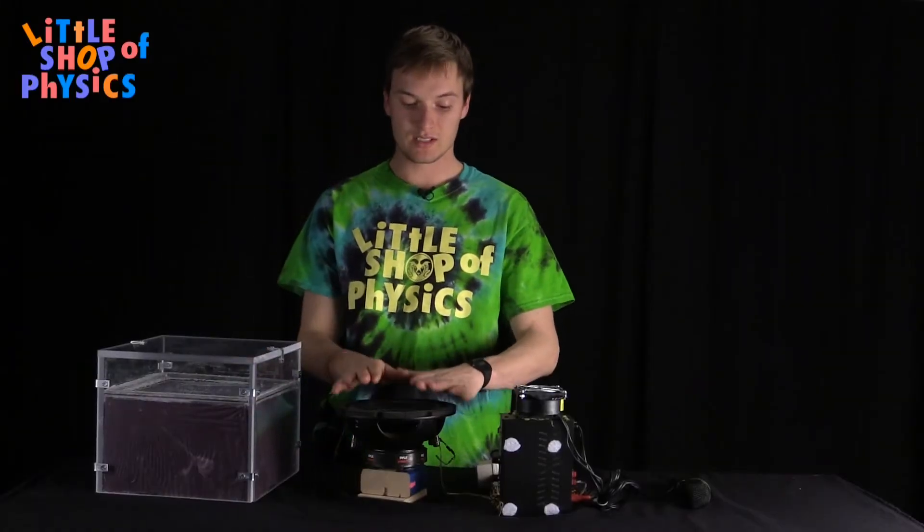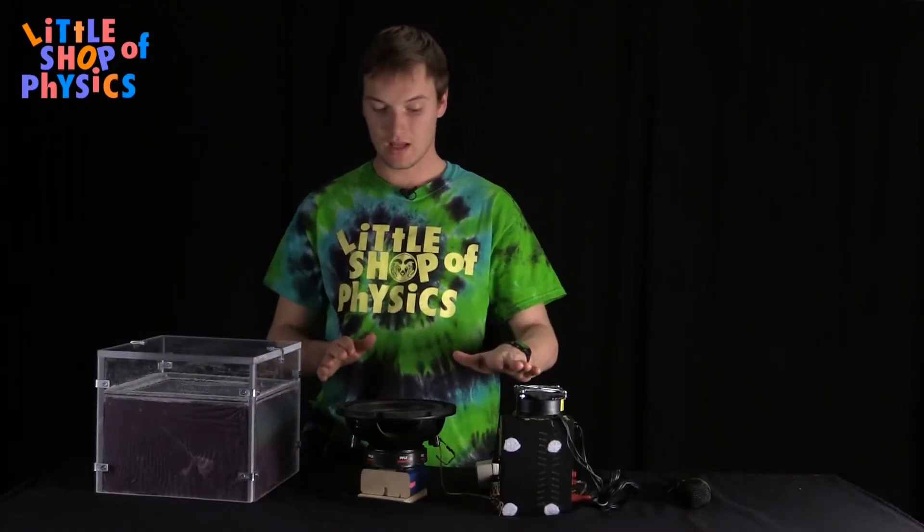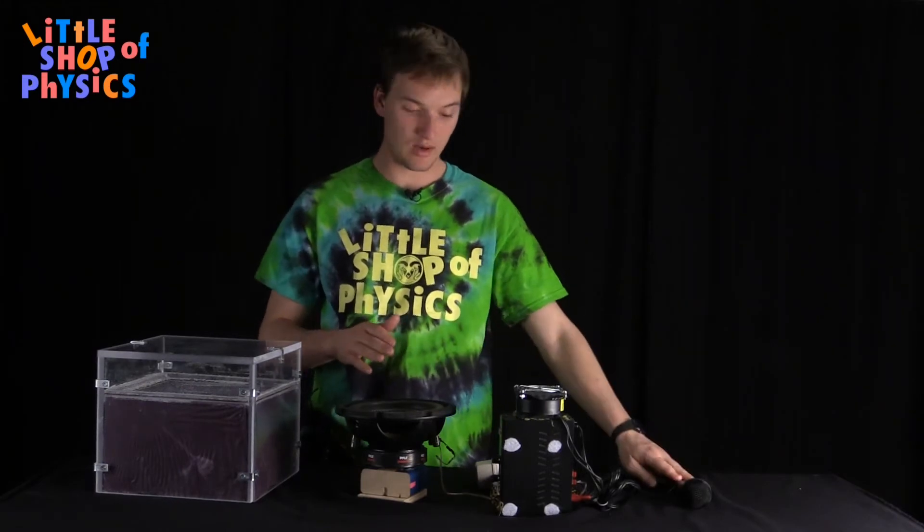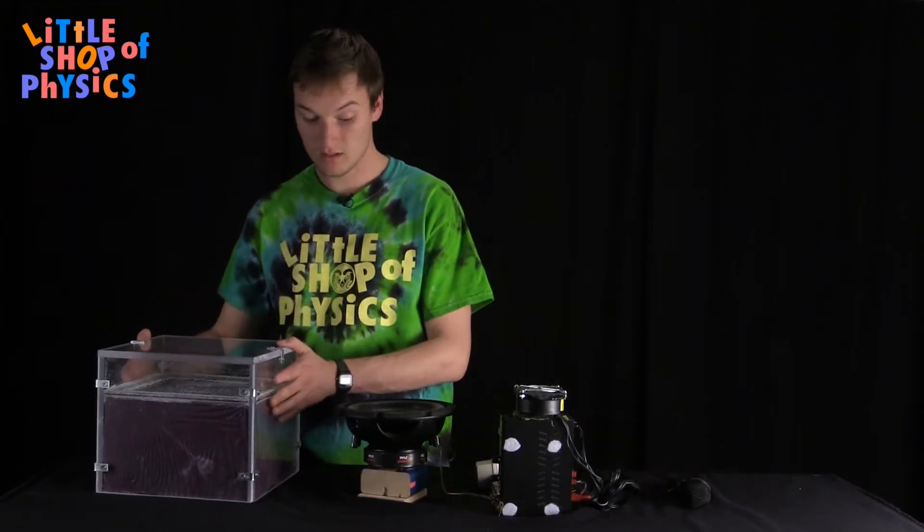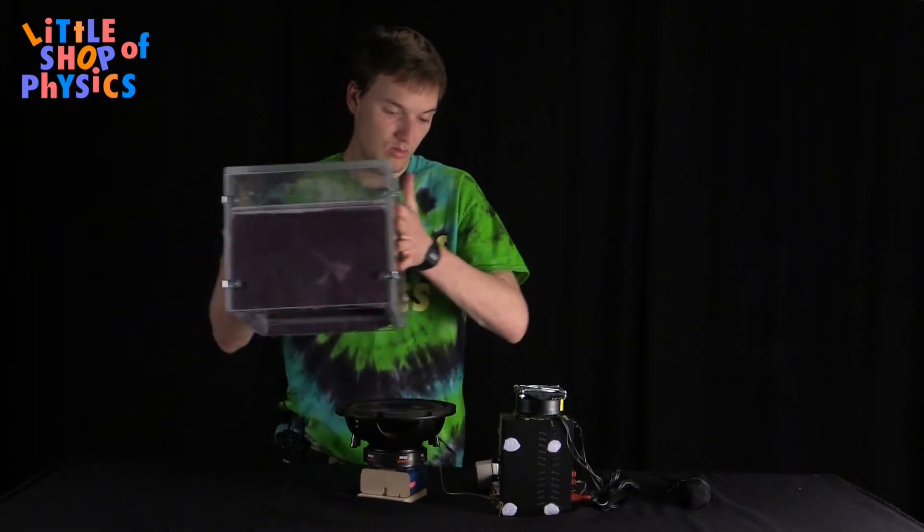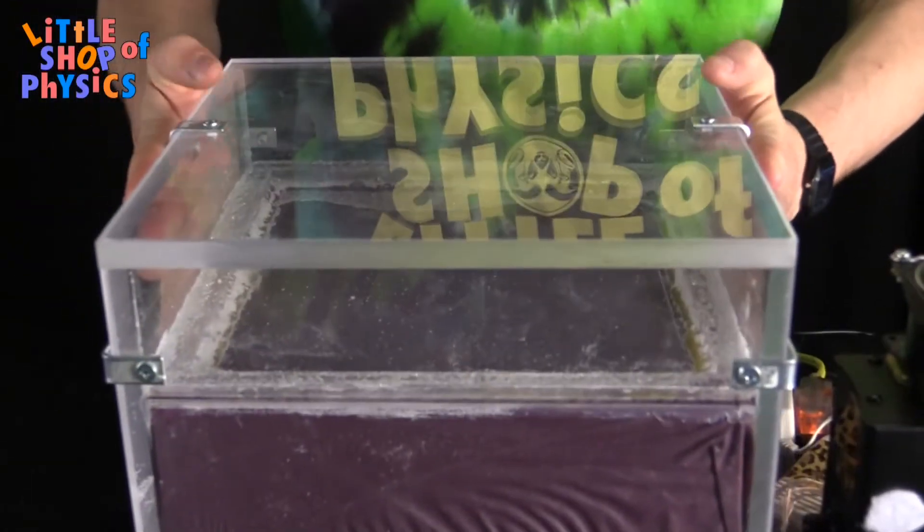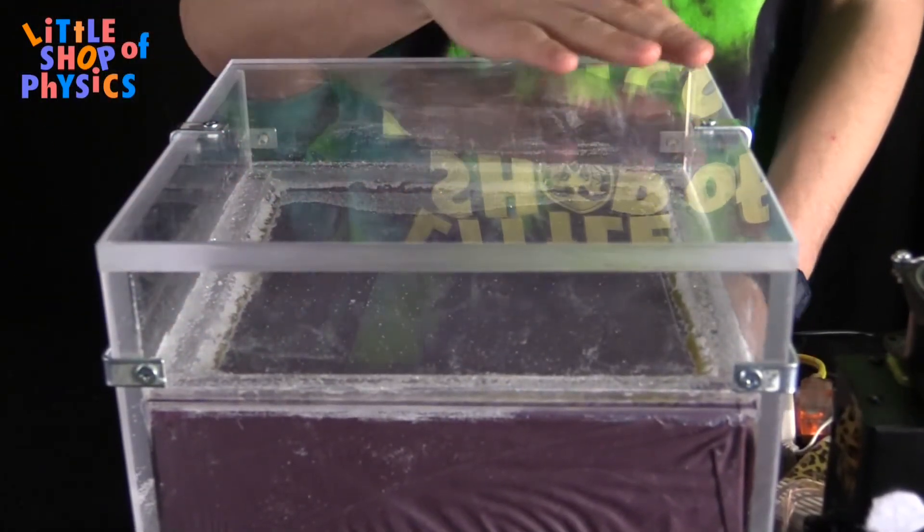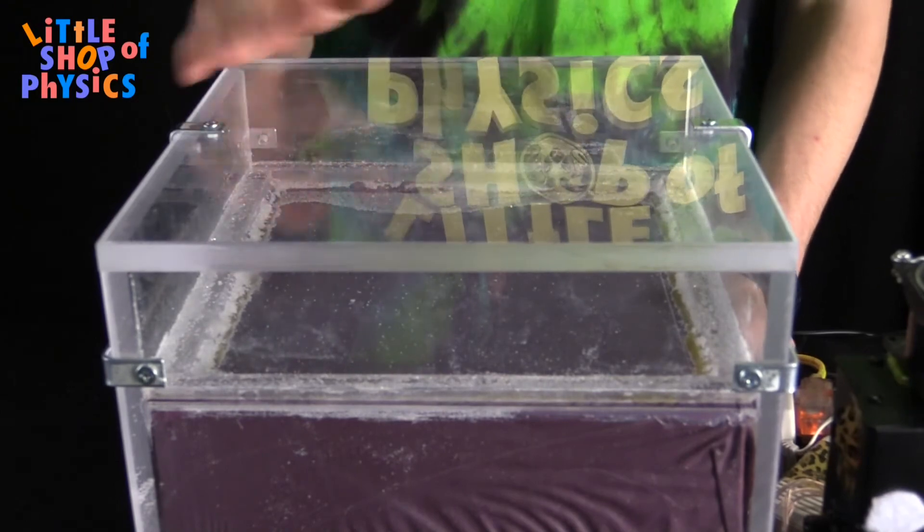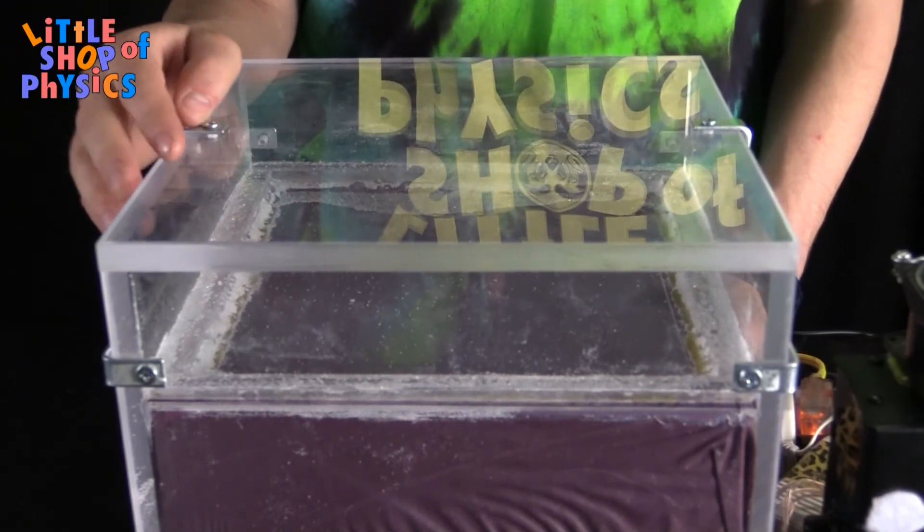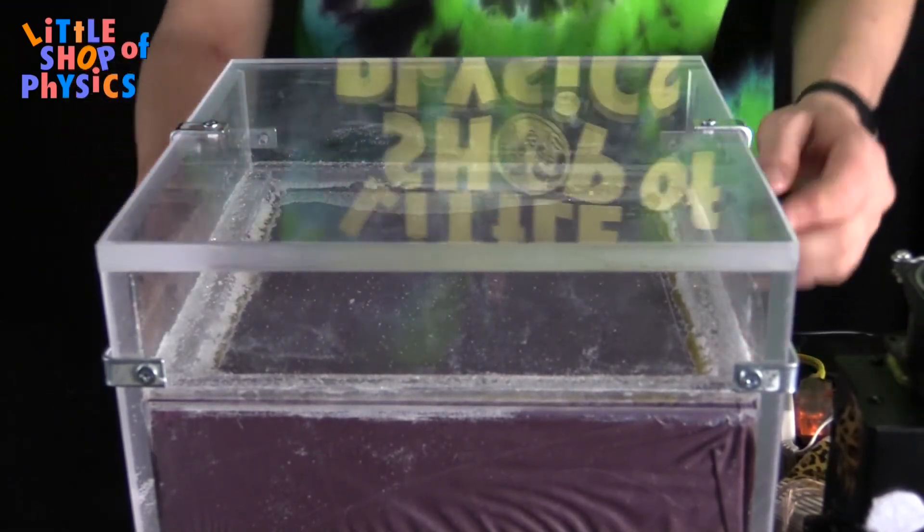Here we have the speaker receiving the signal from the amplifier, which receives the signal from the microphone. You want your rubber diaphragm material laid over the speaker, and then the sand goes on top of the rubber diaphragm.